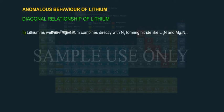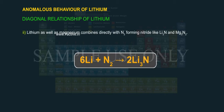2. Lithium as well as magnesium combine directly with N₂, forming nitrides like Li₃N and Mg₃N₂. 6 Li + N₂ → 2 Li₃N.